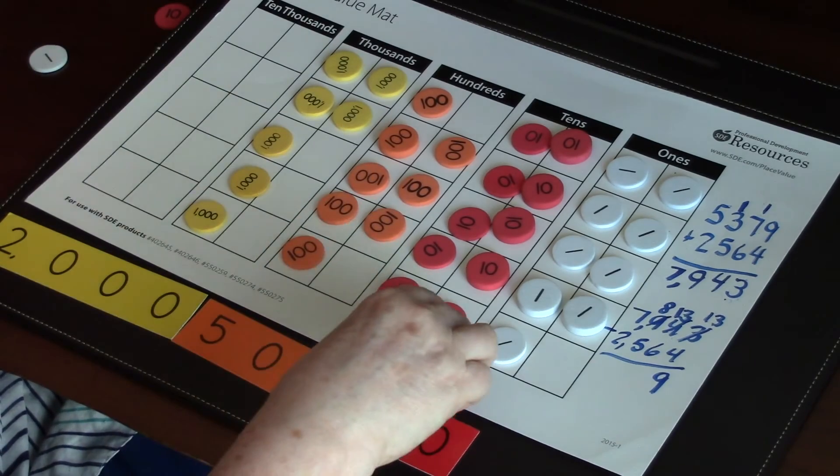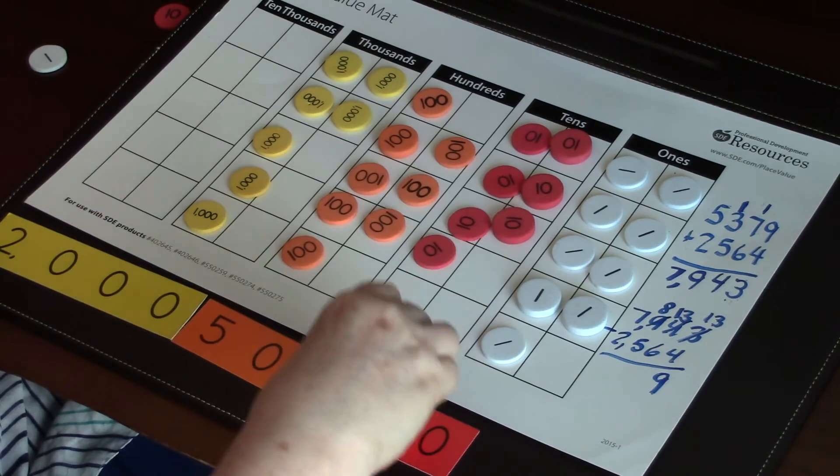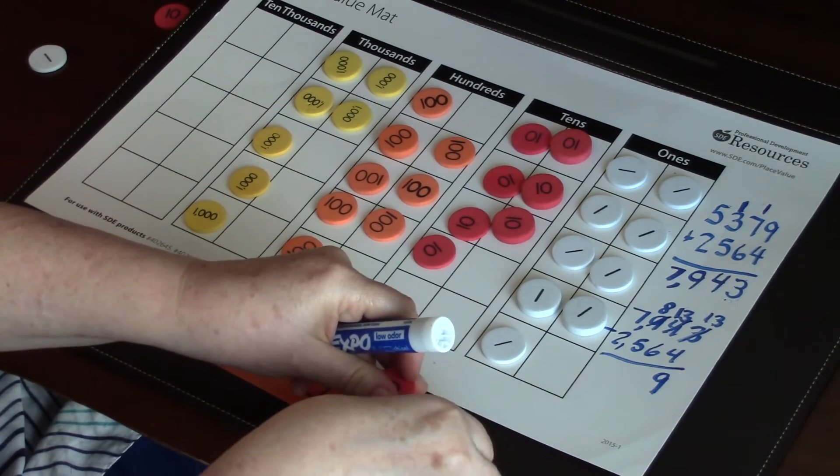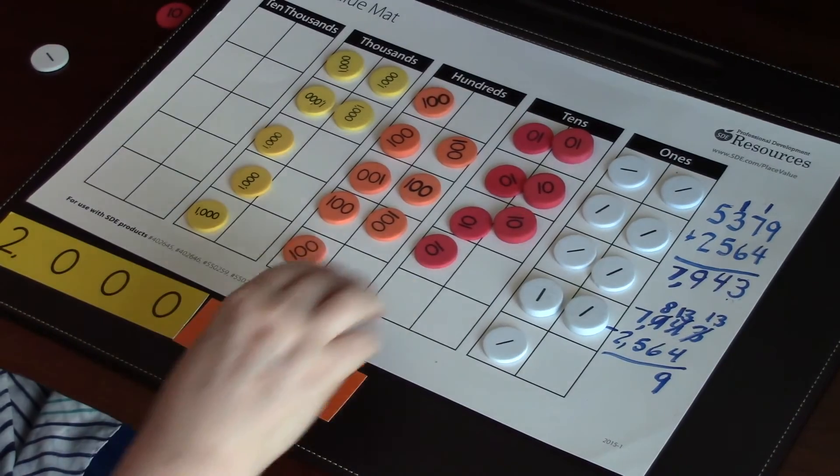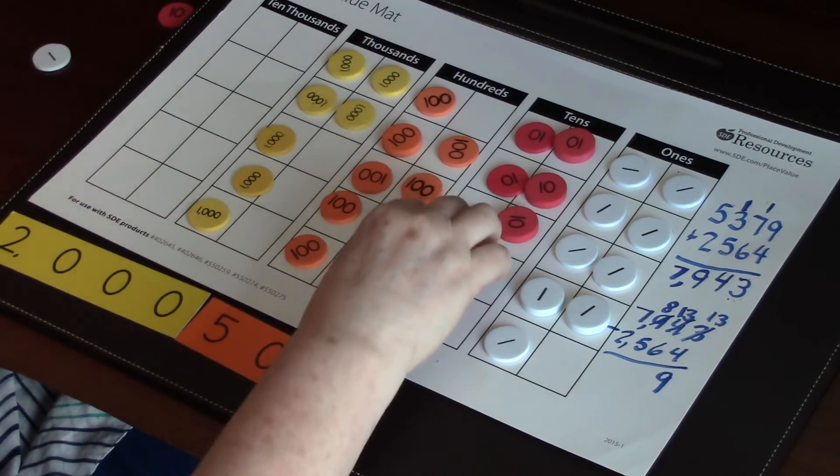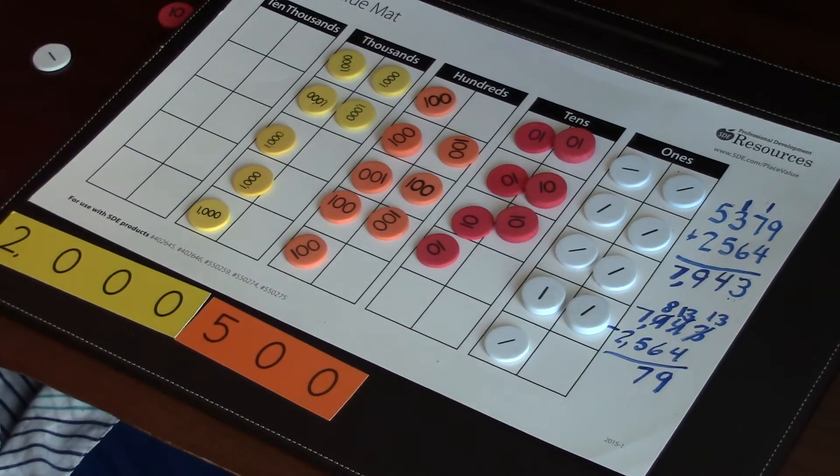So now that we showed it here in our recording, can we take off our six tens? Yeah. So we're going to put that value of sixty on there, and now we're physically going to take that away. And how many tens are you left with in the tens place? Seven. Thirteen minus six is seven. Oh, that worked out perfectly.